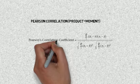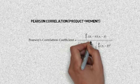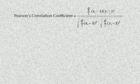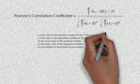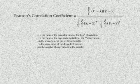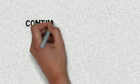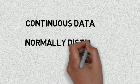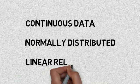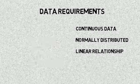R squared will explain what percentage of Y is explained by changes in X and vice versa. To use this formula, the data can only be continuous, normally distributed, and have linear relationship.